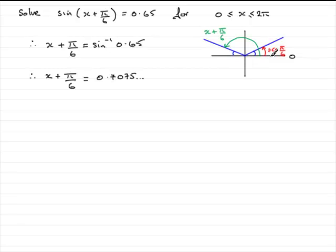So that corresponds to this red angle here, x plus pi upon 6. It also means that this red angle is the same as this little blue angle in here, so in other words the blue angle is 0.7075 and so on radians. That means that this one here is also 0.7075 radians.